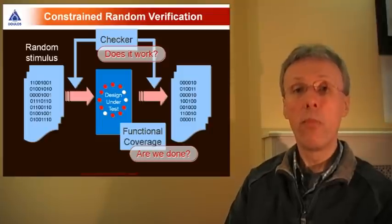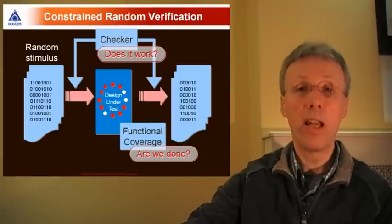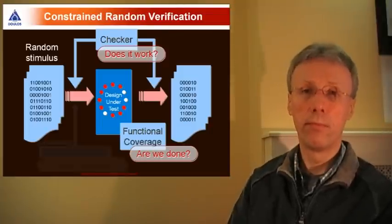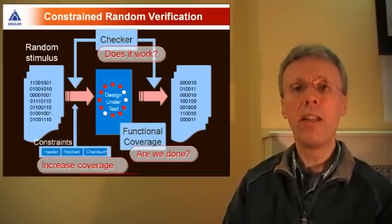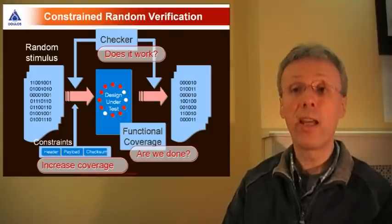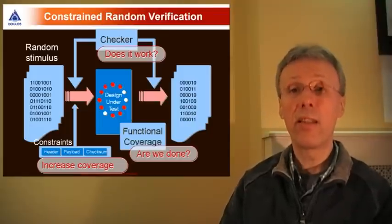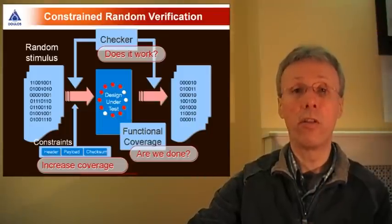So functional coverage provides a measure of how much simulation has been performed. Then finally with random stimulus those random vectors need to be directed in order to explore corner cases in the design and that's done using a set of constraint features in SystemVerilog.